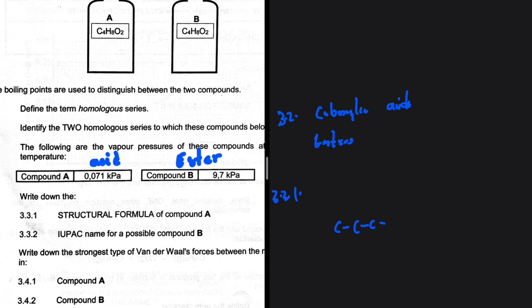So we're going to have one, two, three, four, and then we have double bond oxygen, OH. Everything else is just hydrogen. So that is the structural formula of compound A.